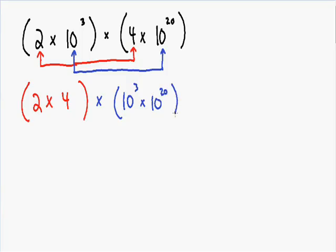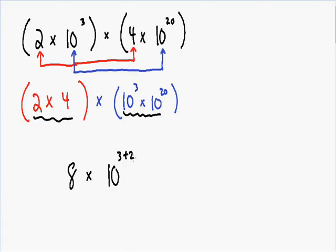Now the only thing we have to do is simplify the expression. In red, we have 2 times 4. 2 times 4 is equal to 8. And in blue, we have two things being multiplied with the same base. Whenever this happens, you can add the exponents to simplify it. So we have a base 10 and we need to add the exponent of 3 with the other exponent of 20.